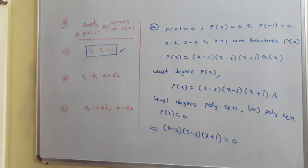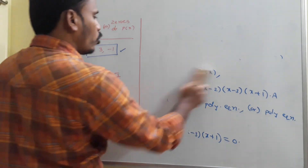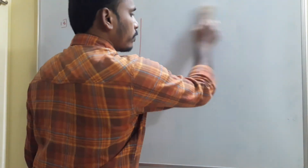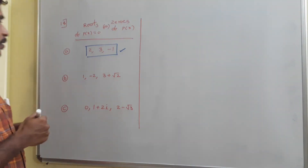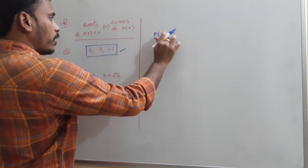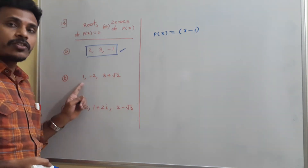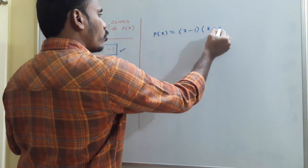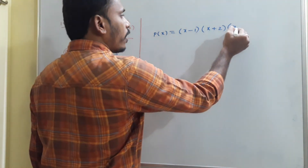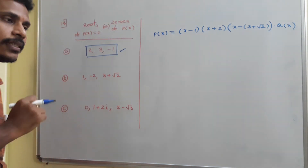For the second part, the zeros are -1, 2, and 3+√2. The polynomial is P(x) = (x-1)(x+2)(x-(3+√2))·Q(x). If I need the polynomial of least degree, then Q(x) is just a constant. If I need the least degree polynomial over real numbers, since 3+√2 won't affect the coefficients being real, the polynomial is (x-1)(x+2)(x-(3+√2))·A.